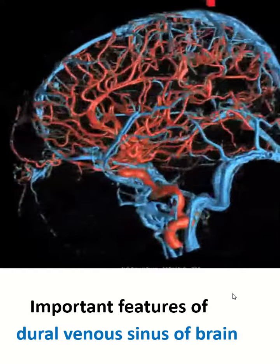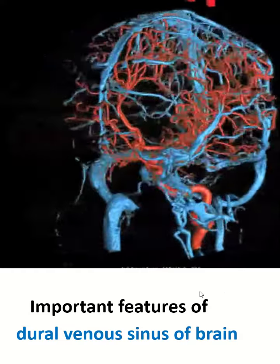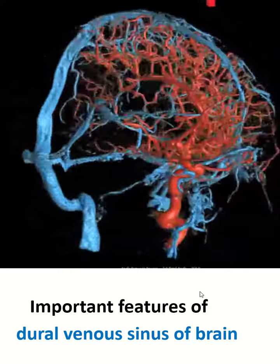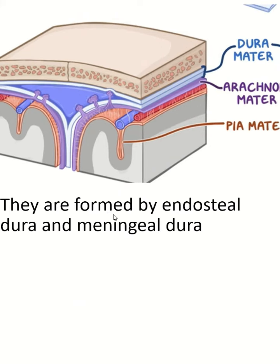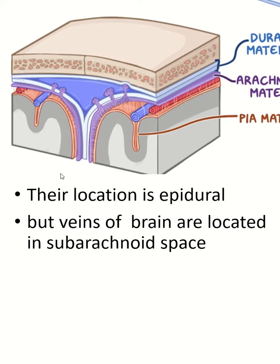Important features of dural venous sinuses of the brain. Dural venous sinuses drain venous blood from the cranial cavity. They are formed by the endosteal dura and meningeal dura, and they are epidural in location.